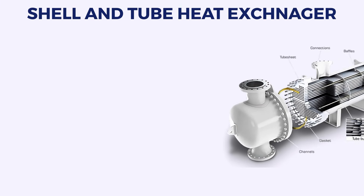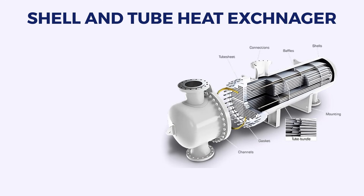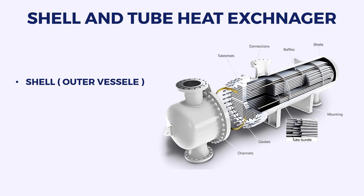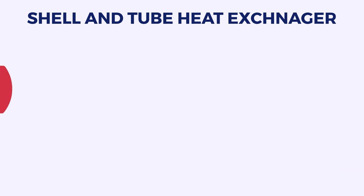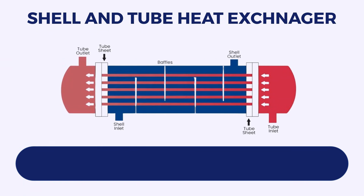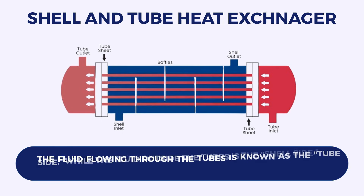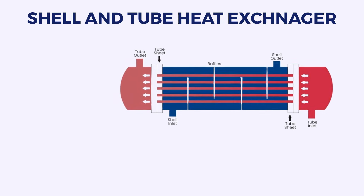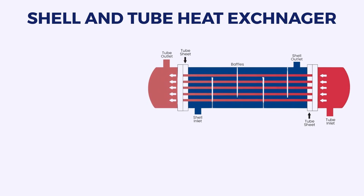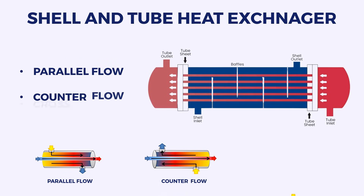Shell and Tube Heat Exchanger. A shell and tube heat exchanger is a type of heat exchanger that consists of a shell (outer vessel) and tubes (inner vessels) through which fluids flow, facilitating efficient heat transfer. The fluid flowing through the tubes is known as the tube side, while the fluid outside the tubes is the shell side. Tube side and shell side can have different flow arrangements, including parallel flow, counterflow, and crossflow.